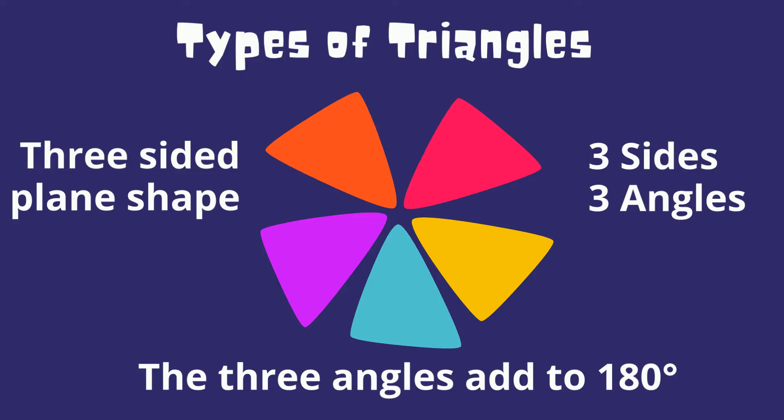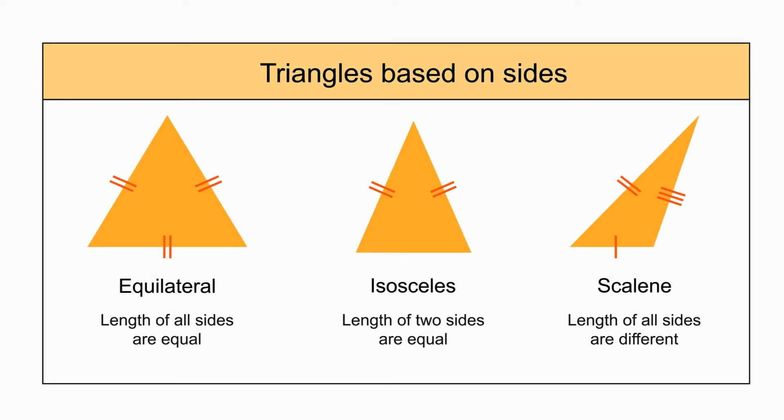Up first are triangles that are classified by the length of their sides. This picture summarizes the three triangles. A scalene triangle has three different side lengths. You can tell this by the different tick marks.